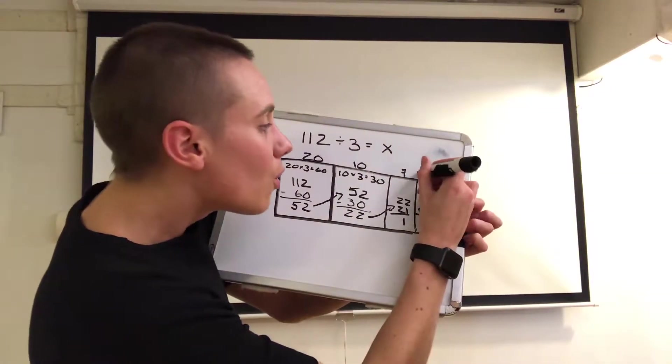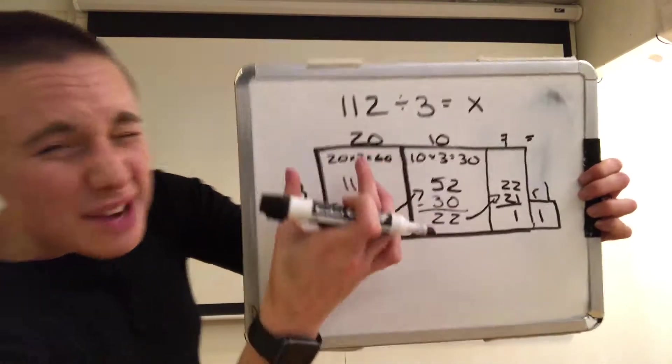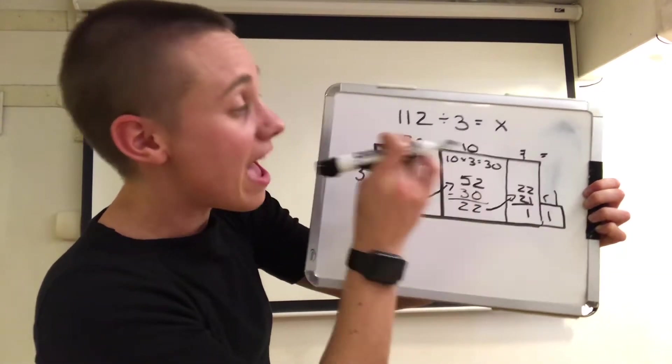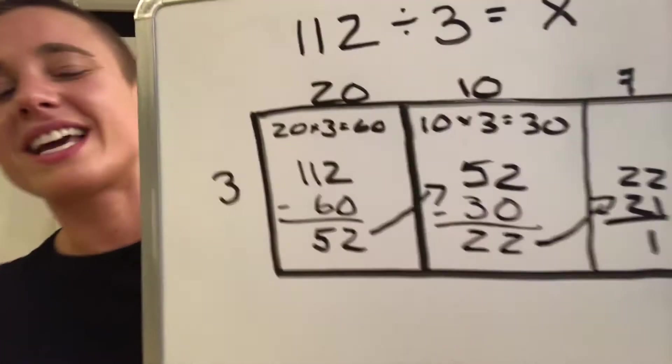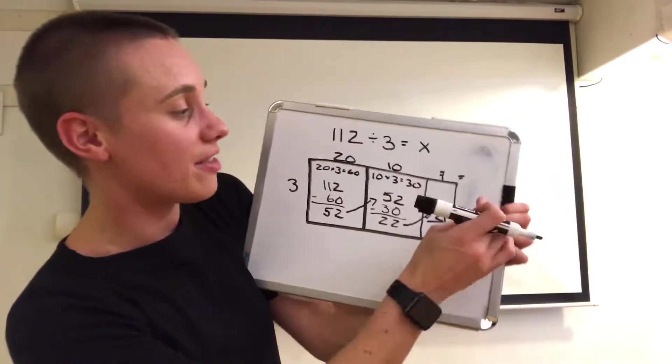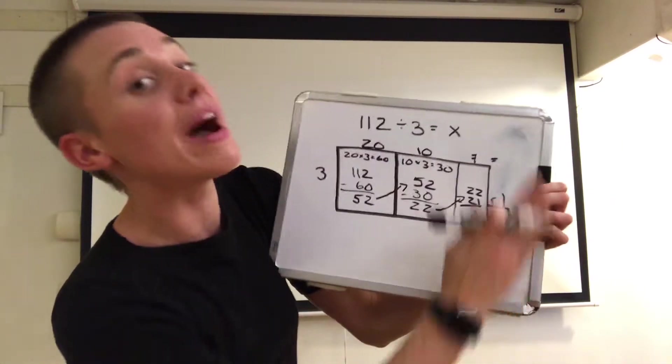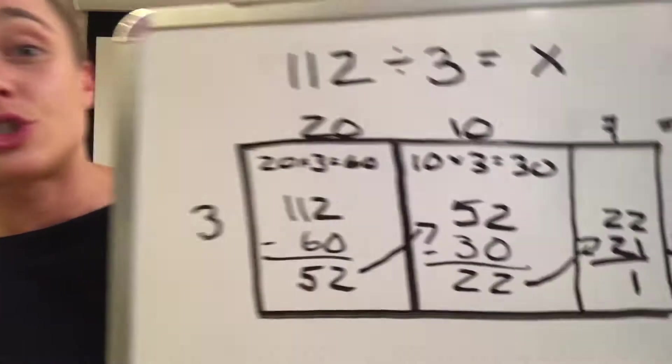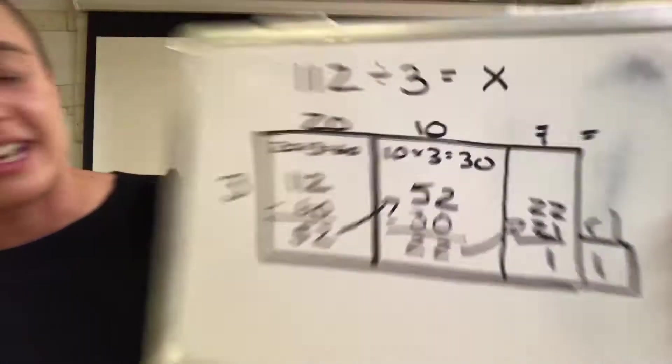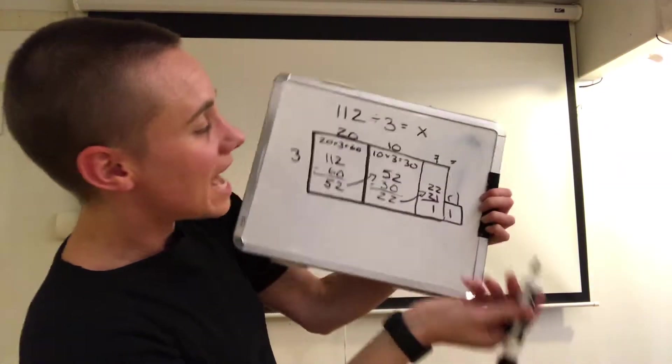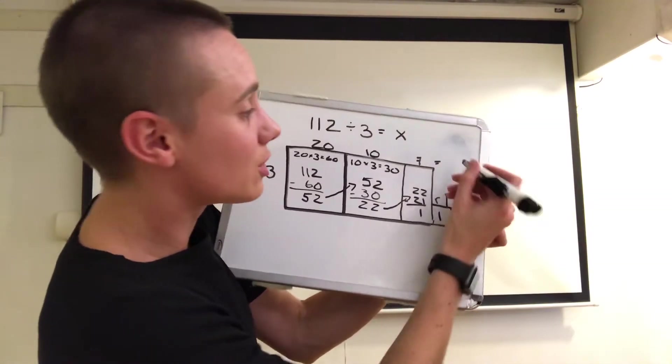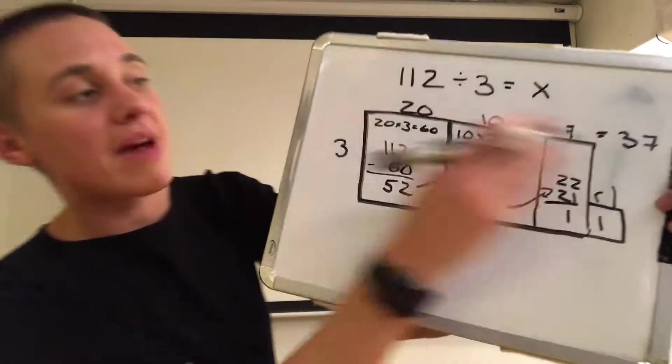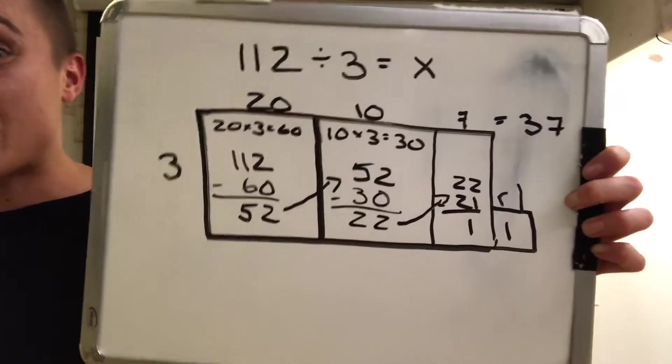Now we're not done because now that we've calculated the sectional lengths of every single one of these small rectangles, we need to add them together to find the length of my whole rectangle. That will be the answer to 112 divided by 3. So 20 plus 10 is 30, plus another 7 is 37. So I know that the length of my ice cube tray is 37.